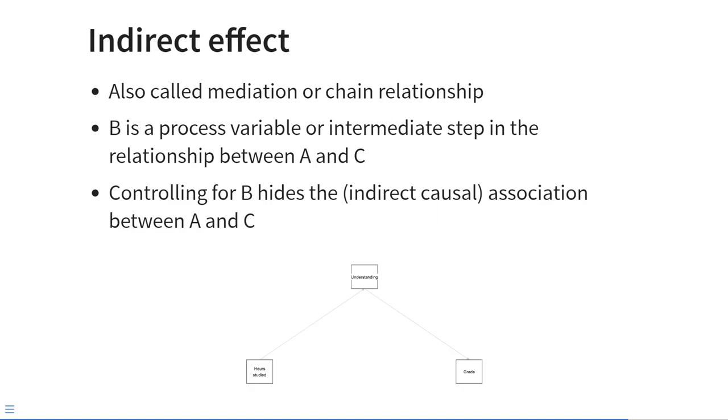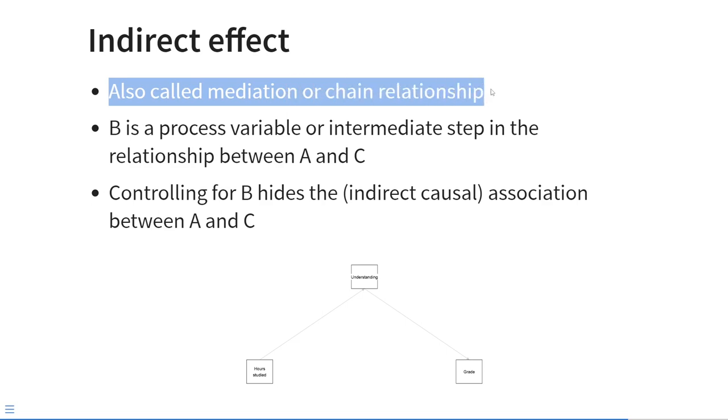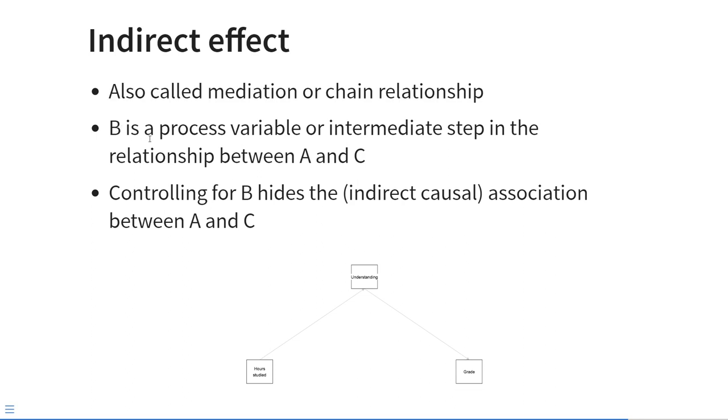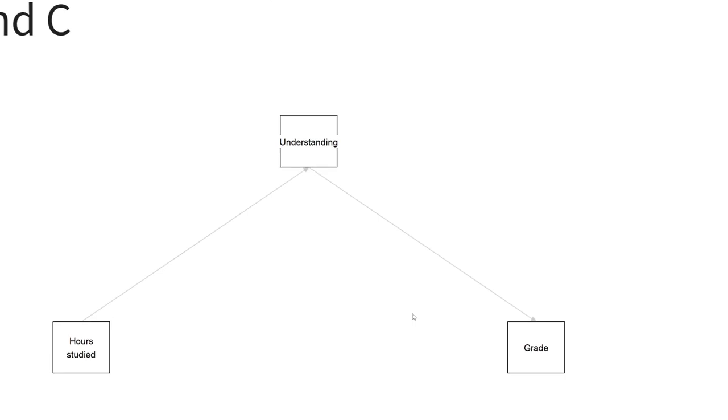The second scenario that I described was the indirect effect. And this is also sometimes called mediation or a chain relationship. In this case, the variable B is a process variable, or an intermediate step, in the relationship between A and C. In this case, if we control for the mediator B, that hides the indirect causal association between A and C.